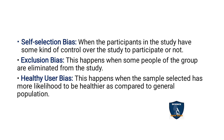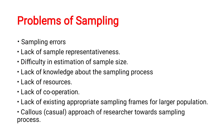Healthy user bias happens when the sample selected is more likely to be healthier compared to the general population. Whatever samples you have taken are healthier than the general population — in that case there may be chances for healthy user bias. These are the various types of sampling bias.